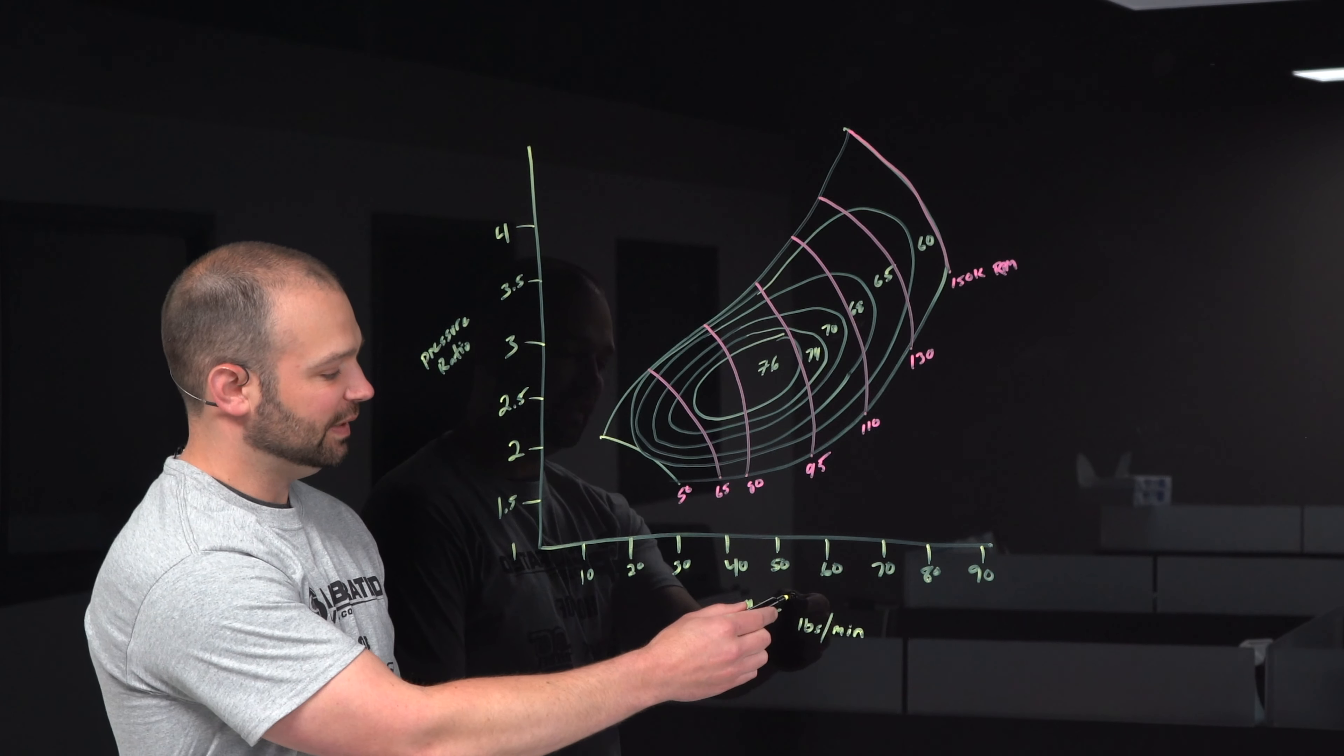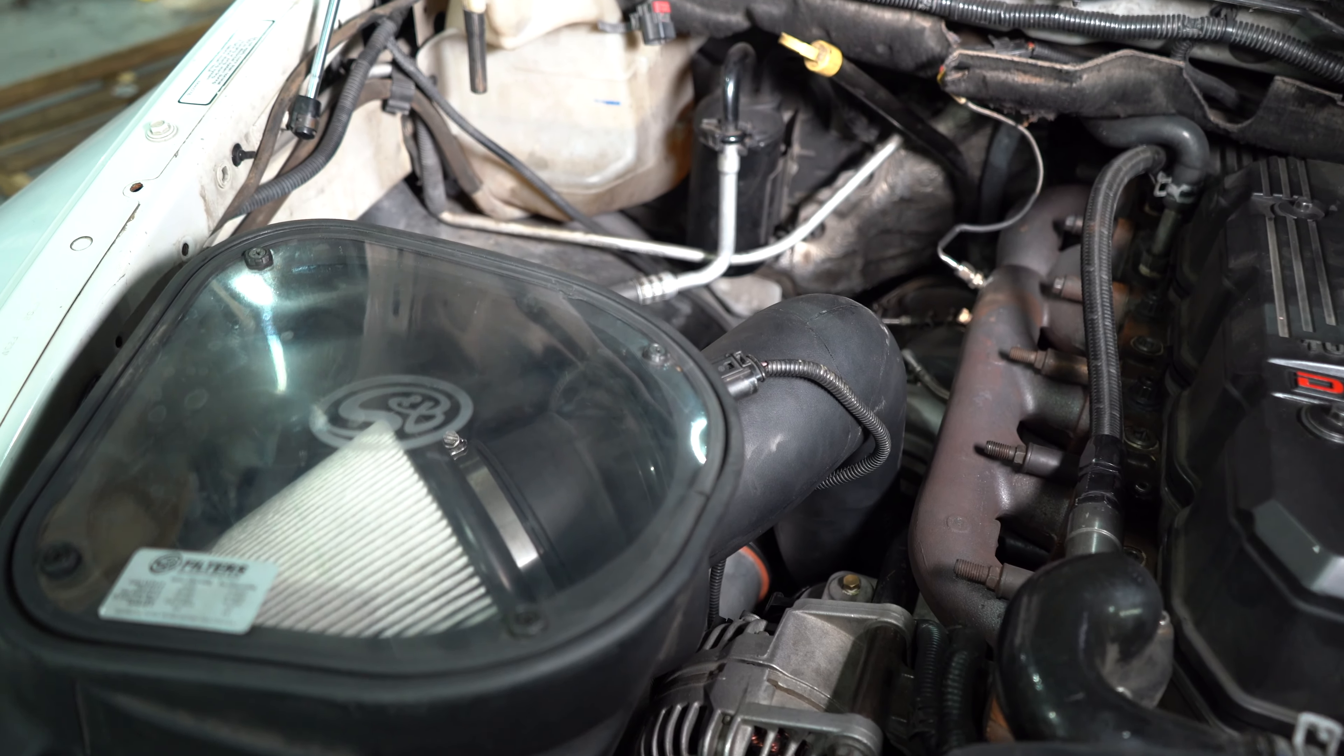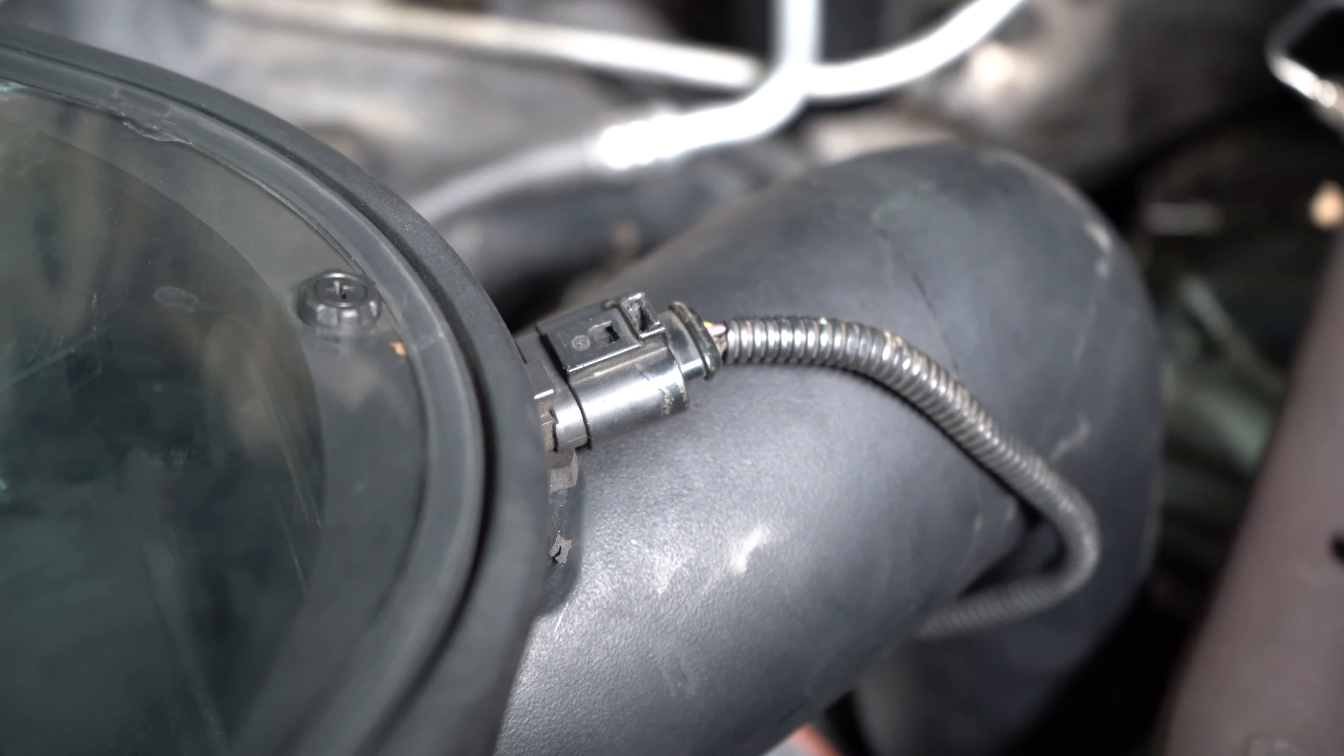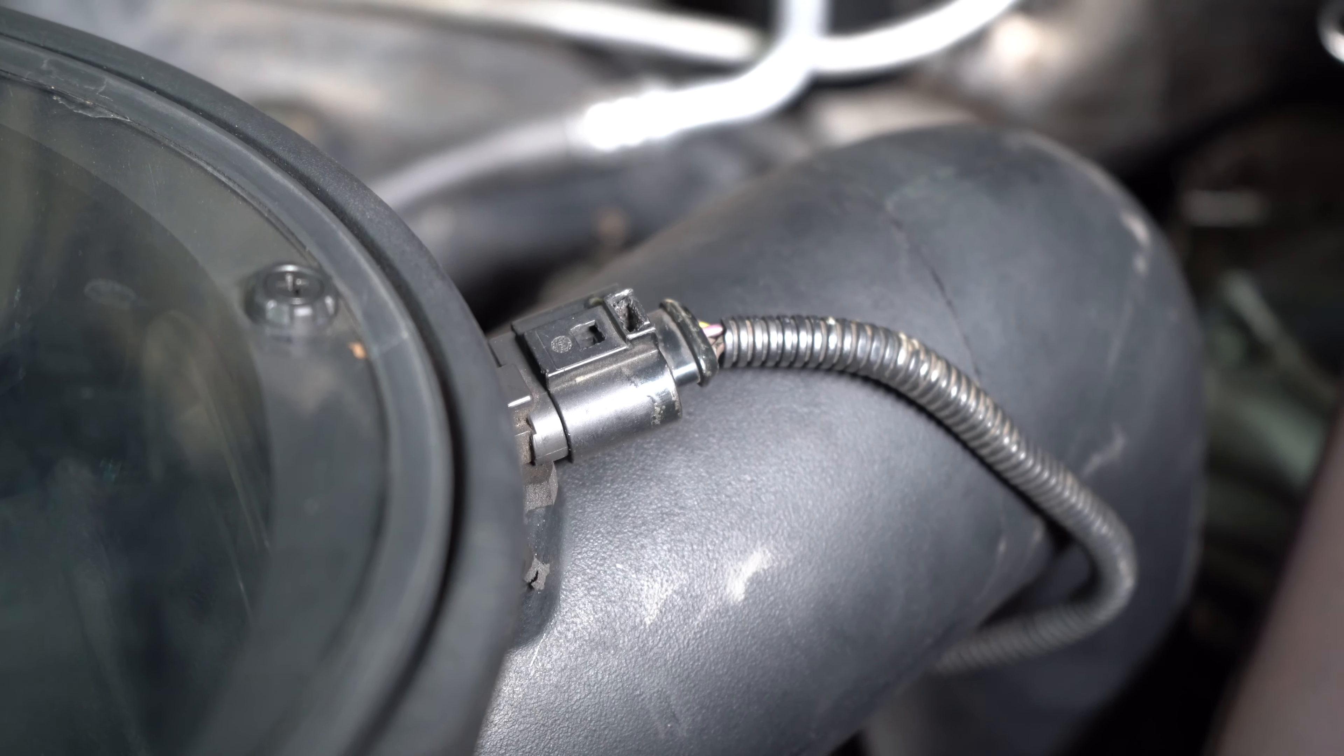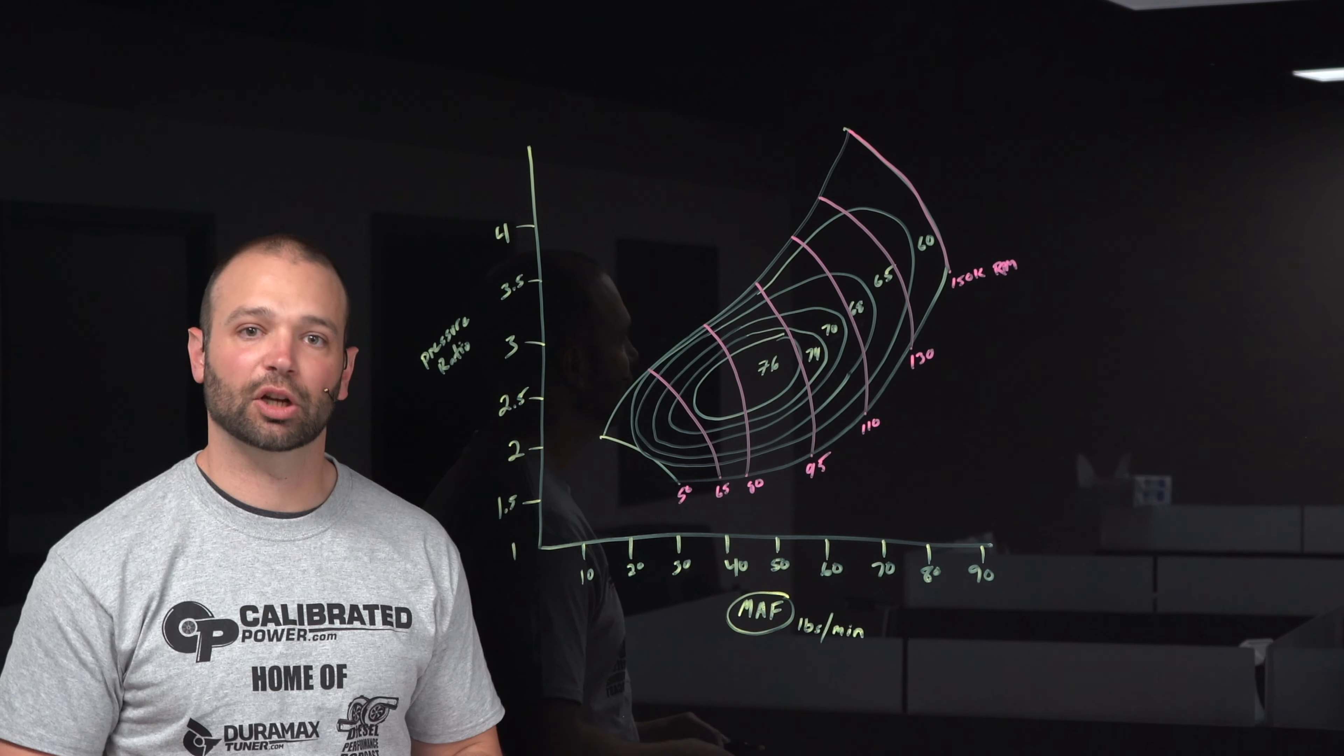Okay, so most trucks these days have mass airflow sensors. They're located in the intake track of the truck, they measure airflow coming past the air filter, and they can tell how much air goes into the engine, into the turbocharger. So mass airflow, relatively easy to measure, the sensors last a long time, they're not terribly expensive.